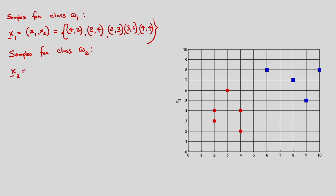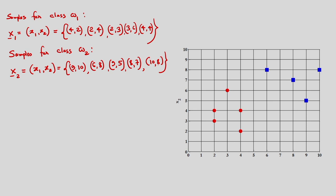We are considering two dimensional samples. Samples for class omega 2 are: 9,10 and 6,8 and 9,5 and 8,7 and 10,8. We are considering two classes and two dimensional samples for each class. You can see the plot of these samples in MATLAB — corresponding to class omega 1 you can see the red samples and corresponding to class omega 2 you can see the green samples.